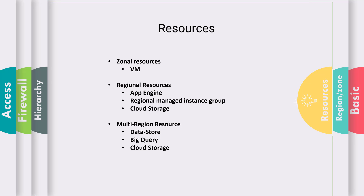Resources are categorized based on how they are located within the GCP environment. A virtual machine always resides within a single zone. However, resources like App Engine reside within multiple zones, making them highly available — if one zone goes down, the application is still up in another zone. For an even higher level of availability, resources like Cloud Storage can reside within multiple regions, so if one data center goes down, the resource remains available in another region.